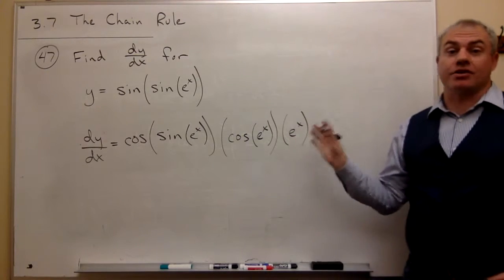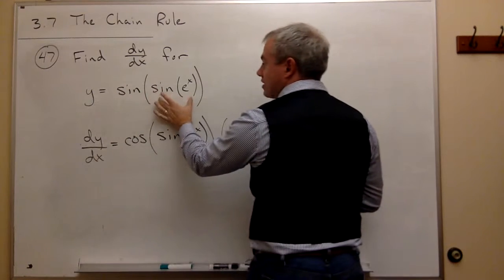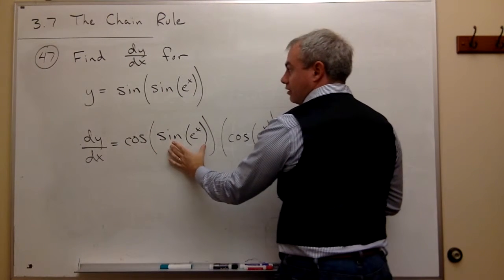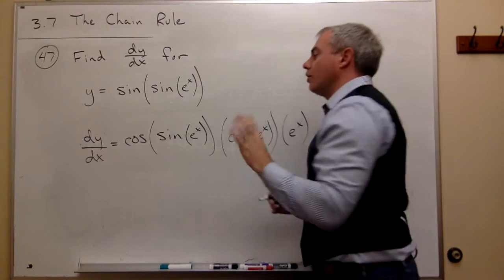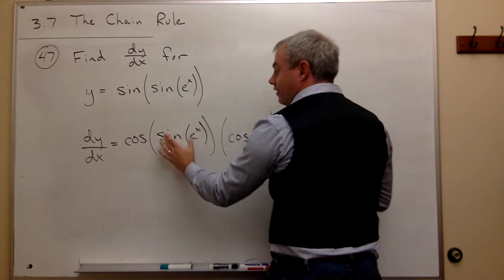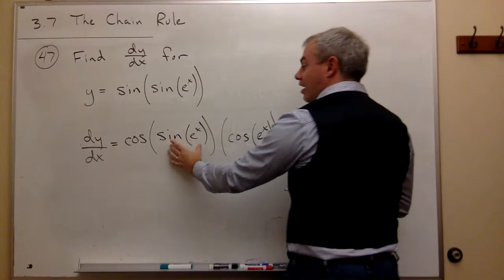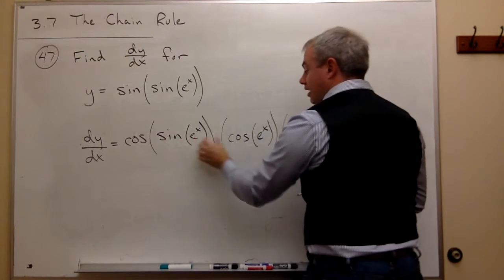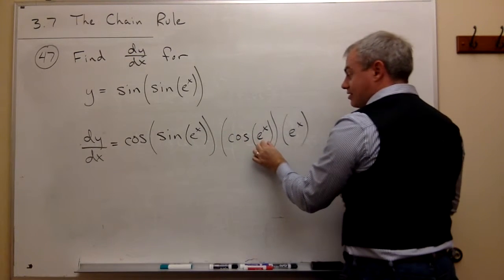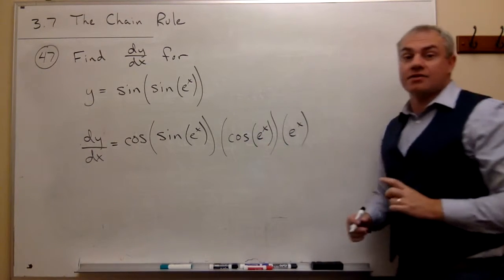So that's the answer. Let's review what we did. To take the derivative of sine of something, the derivative is cosine of something — notice these two are the same. Then I multiply by the derivative of the something. The derivative of sine of e to the x is itself a chain rule problem: the derivative of sine of something is cosine of that something, in this case e to the x, times the derivative of the inside. The derivative of e to the x is e to the x, and we're done.